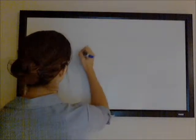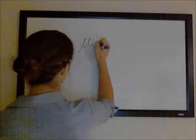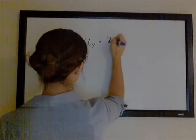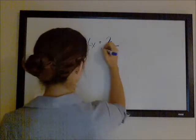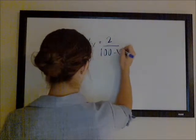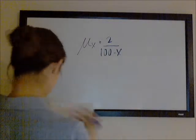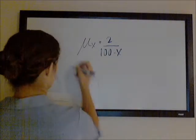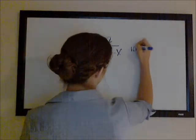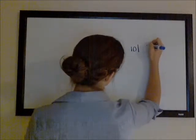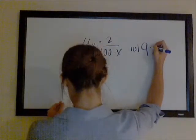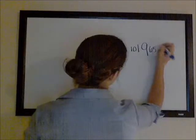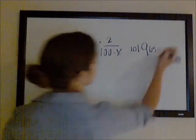So let's say that the force of mortality is 2 over 100 minus x, and we want to know the probability that a 65-year-old lives 10 years and then dies in the next year.